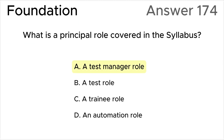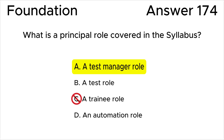The correct answer is A: a test manager role, according to the ISTQB syllabus. In the syllabus, two principal roles in testing are covered: a test management role and a testing role. Answer B is wrong because a test role is not a principal role — the correct wording is a testing role. Answer C is wrong because a trainee role is not mentioned in the ISTQB syllabus. Answer D is wrong because an automation role is not mentioned in the ISTQB syllabus.